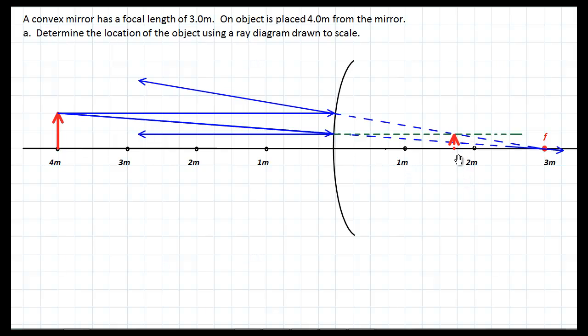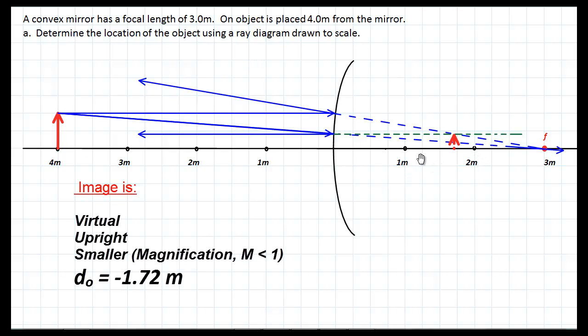And its location, if that's the one meter mark and that's the two, our increments are 0.25. So this would be 1.5 halfway in between, 1.75. So it's just before 1.75, looks like it's around between 1.7 and 1.72. So d_i is negative 1.72 meters. And we say it's negative because it's a virtual image.